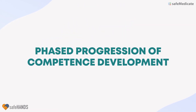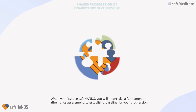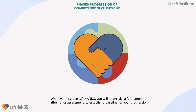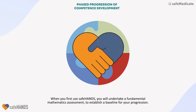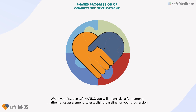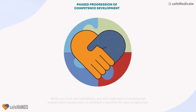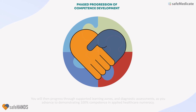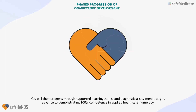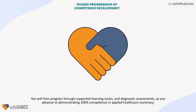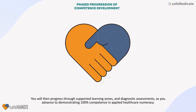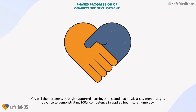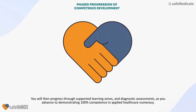Phased progression of competence development. When you first use Safe Hands, you will undertake a fundamental mathematics assessment to establish a baseline for your progression. You will then progress through supported learning zones and diagnostic assessments as you advance to demonstrating 100% competence in applied healthcare numeracy.